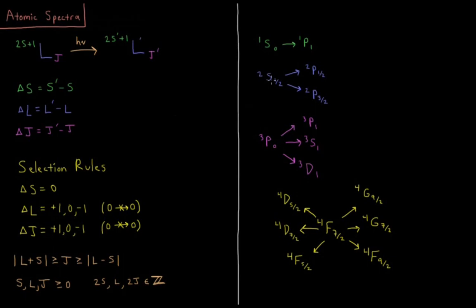From a doublet s1 half, we can go to doublet p, we could go to doublet p1 half or doublet p3 halves, those are the two allowed values of j for doublet p, and they are both within 1 of 1 half.